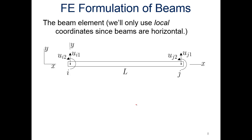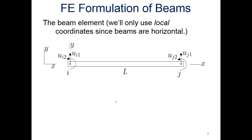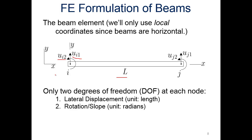So for the FE formulation of beams, the beam element is what's shown here. We'll only use local coordinates since beams are horizontal, and we'll come back to that in a bit. If we look at node I and node J, we have nodes at either end of our element, with some overall length here. So we have two displacements we're concerned about: one is the lateral displacement, and we also have the angle or rotation displacement.